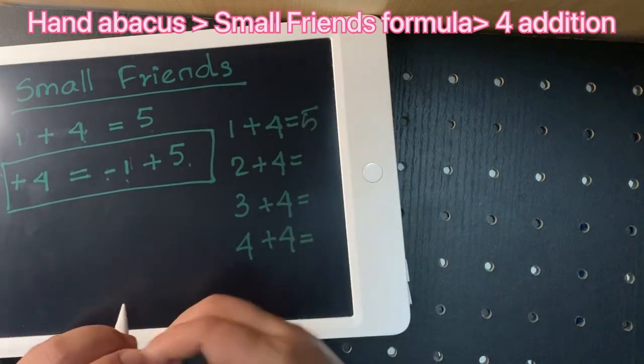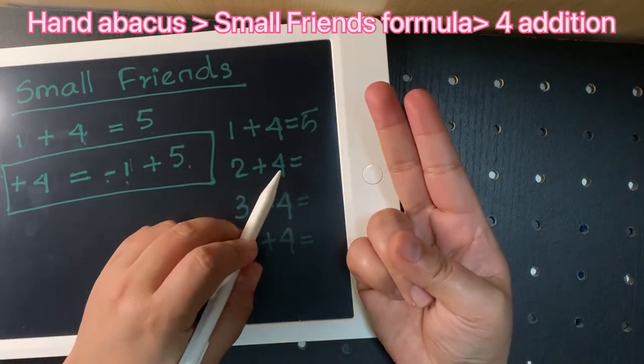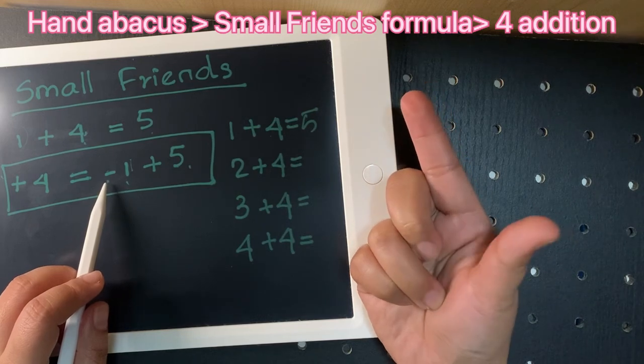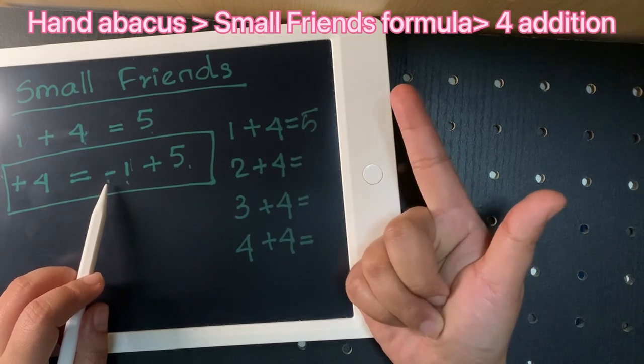Okay. Two plus four. So we're gonna jump low: minus one plus five. Answer is six.